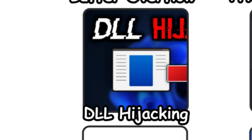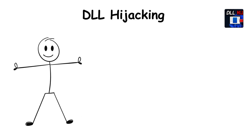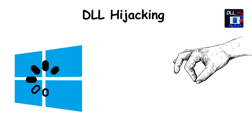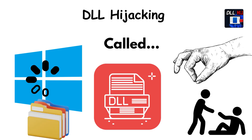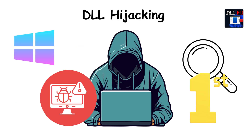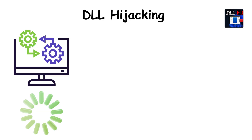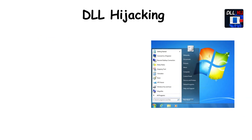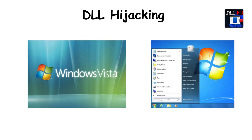DLL hijacking. Imagine someone slipping a fake document into a stack of trusted papers. Windows loads small helper files called DLLs. If an attacker places a malicious one where Windows checks first, the system loads the wrong file. Windows 7 and Windows Vista experienced this frequently. It's deception by perfectly mimicking something Windows expects.